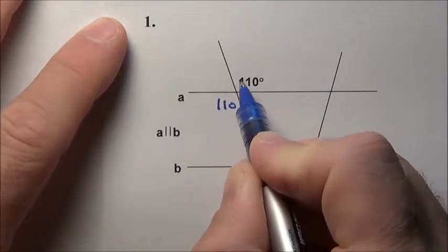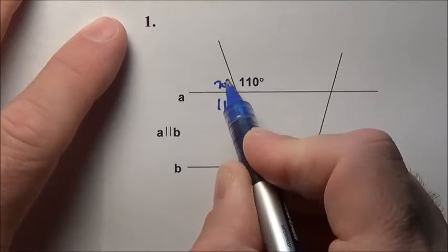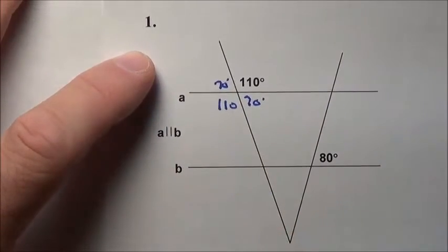So if it's opened up 110, this would have to be 70. Once I have 70, it's got to be 70 there.